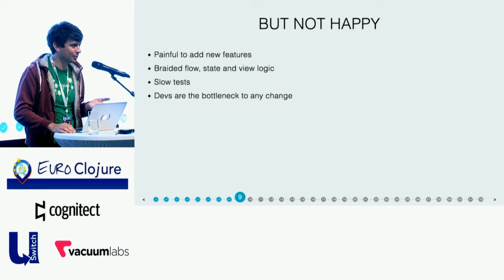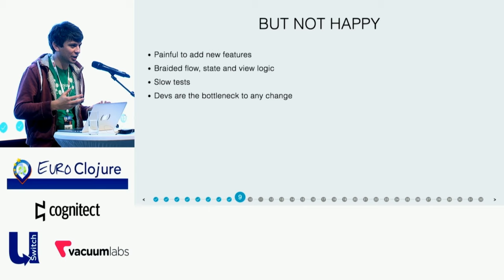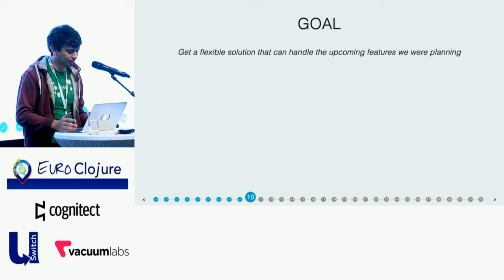Part of the reason was that we had a lot of braided flow state and view logic, which is a bit intrinsic to the idiomatic way of doing things in Rails. It was particularly painful for this application because our checkout is very much a step-through wizard kind of thing, which is not very easy to implement out of the box with Rails. On top of that, we started to add very slow running tests, about ten minutes to run the whole test suite. And developers ended up being the bottleneck to any change to the checkout — if designers wanted to make a small visual change, developers would have to help with the template language.